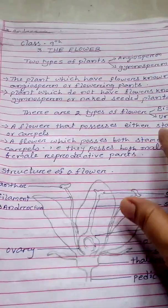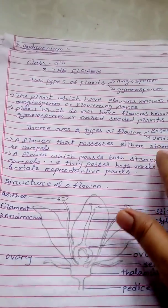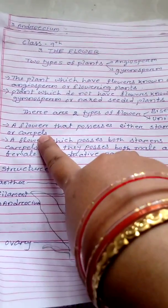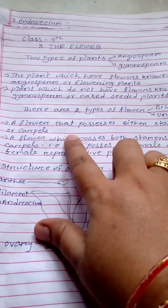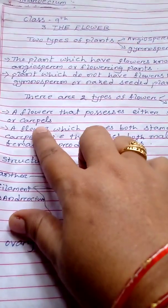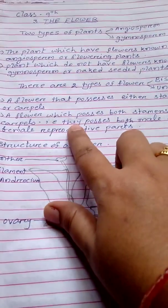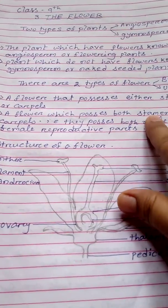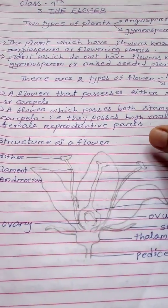Now we have to know what is stamen and what is carpel. The stamen is the male reproductive part of the plant, whereas the carpel is the female reproductive part of the plant. If the flower possesses either the male reproductive part or the female reproductive part, it is known as unisexual. Whereas the flower which possesses both male and female reproductive parts is known as bisexual.